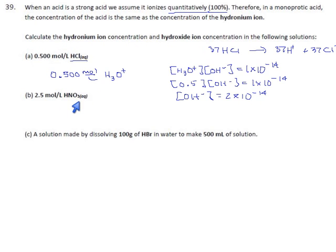Nitric acid, same thing. This is a top six, and as soon as you put that in water, you're going to get H3O at a concentration of 2.5 moles per liter. However much HNO3 you used to have, now you have that much H3O.